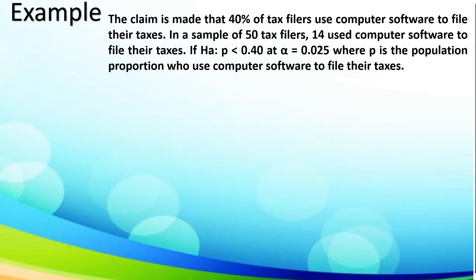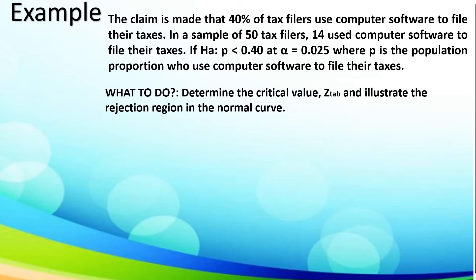To deepen our understanding, let us take this example. The claim is made that 40% of tax filers use computer software to file their taxes. In a sample of 50 tax filers, 14 use computer software to file their taxes. The alternative hypothesis is P is less than 0.40 at alpha of 0.025, where P is the population proportion who use computer software to file their taxes. We will determine the critical value or Z-tab and illustrate the rejection region. Since P is less than 0.40 at alpha of 0.025, it falls under left-tailed test.